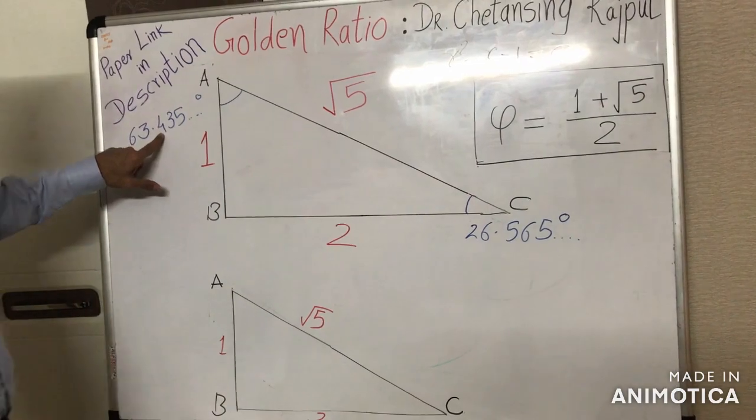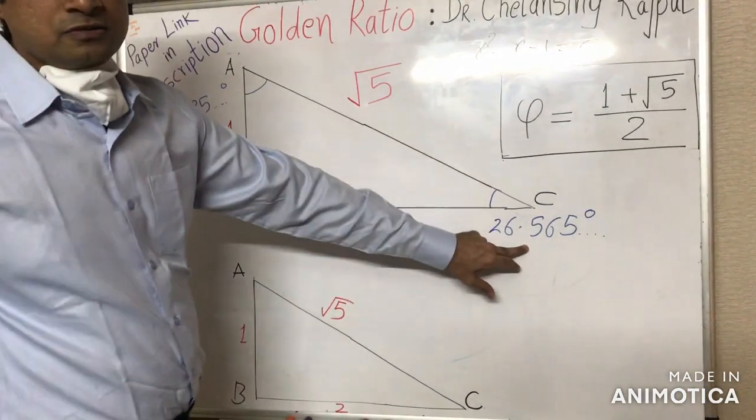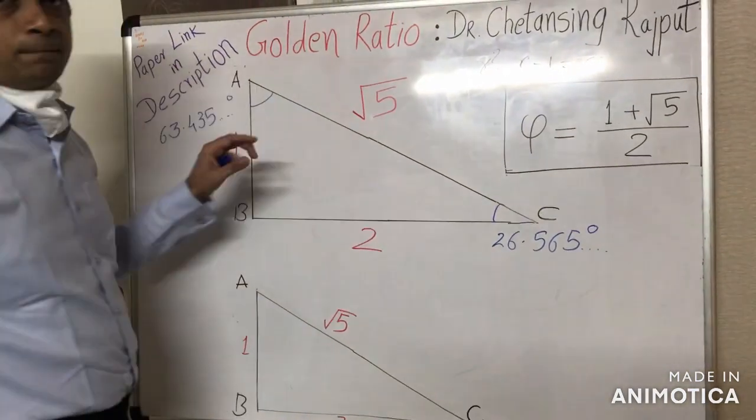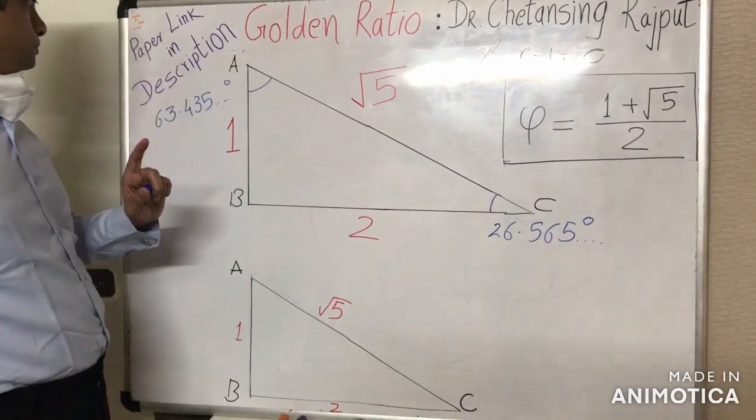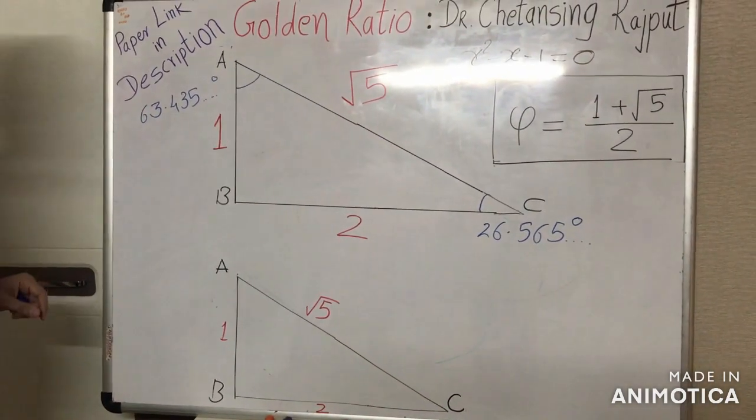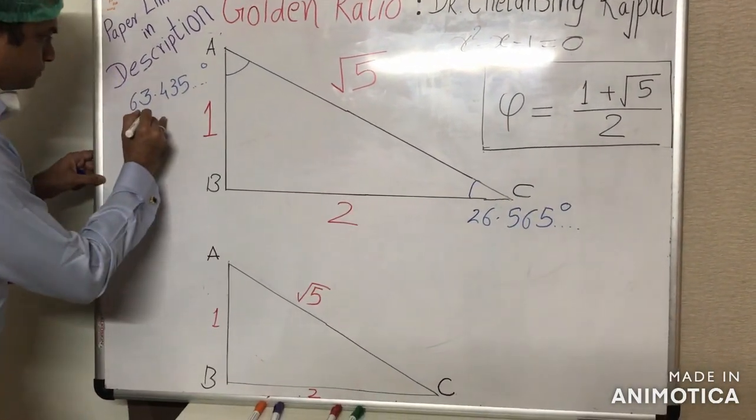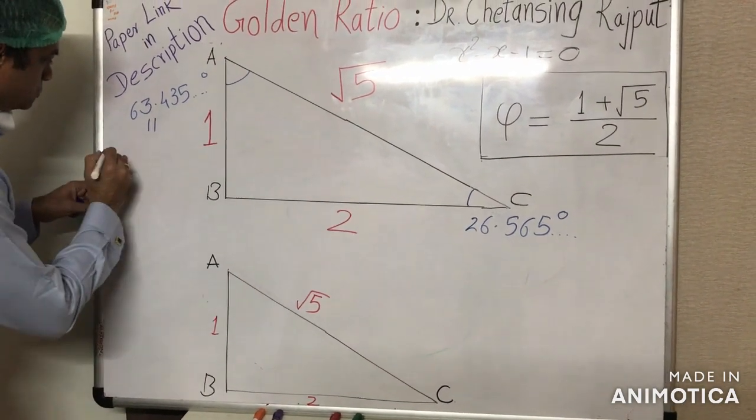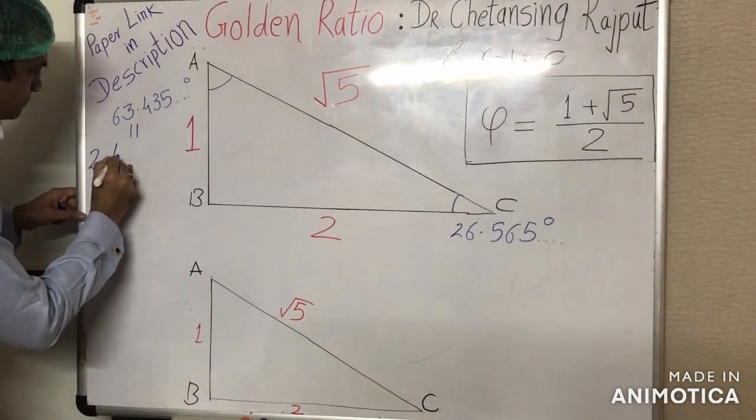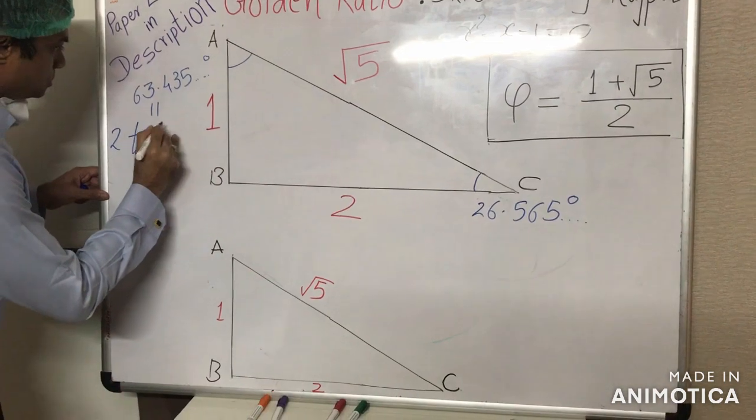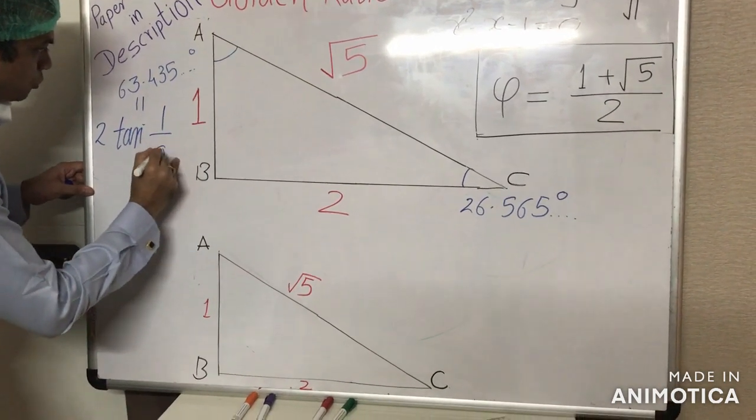Look at these figures. These measures of angles in degrees, these values are also the precise expression of golden ratio. Like this angle 63.435 degrees, this is precisely equal to twice the arc tangent of the inverse of golden ratio.